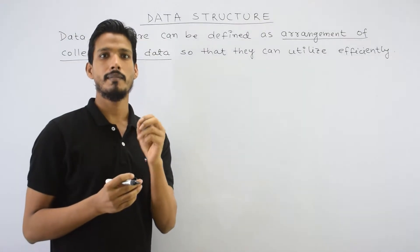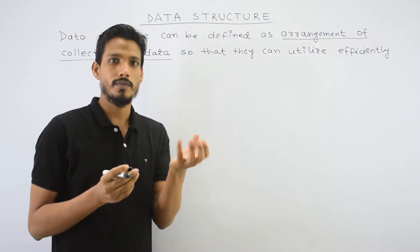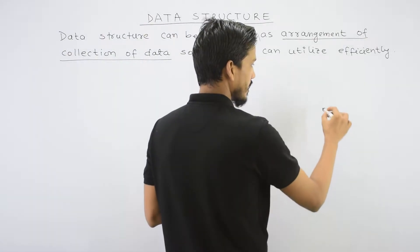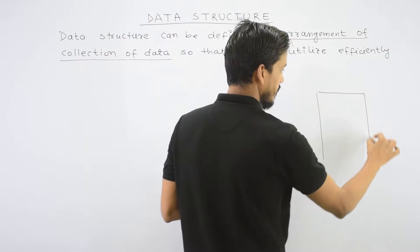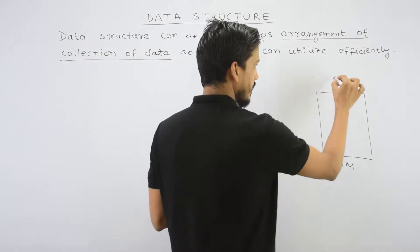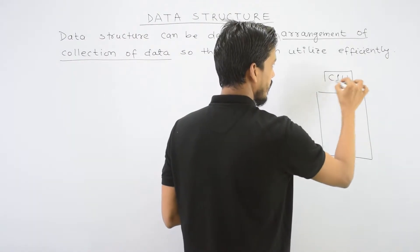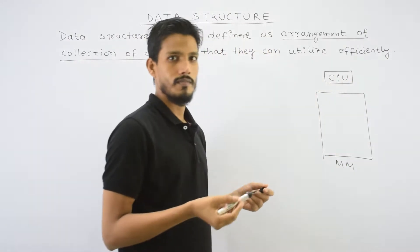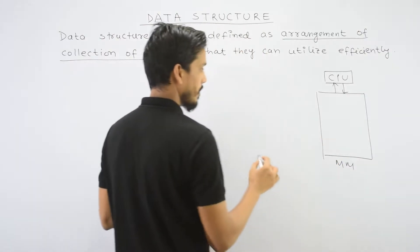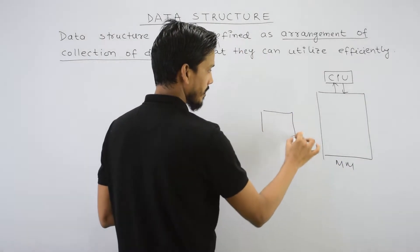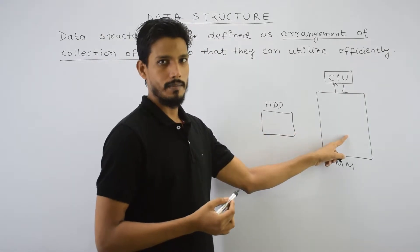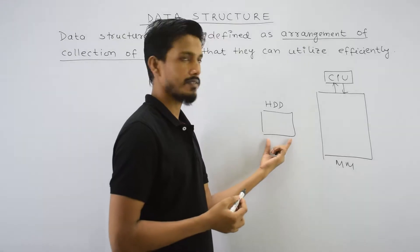Let's understand where data structure is used and how we understand data structure. For example, how do you use the data structure in execution? Suppose this is your main memory — this is your RAM. And this is your CPU, the Central Processing Unit. Instructions will execute one by one. This is your main memory, and this is your hard disk, your secondary storage. The hard disk is your secondary storage; RAM is your primary memory.